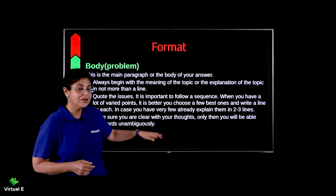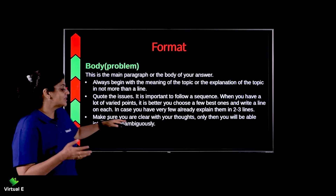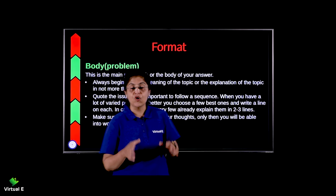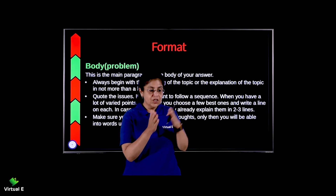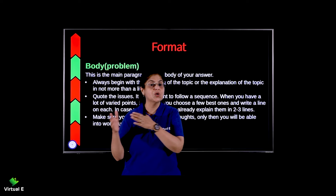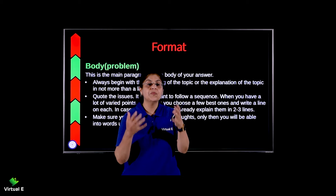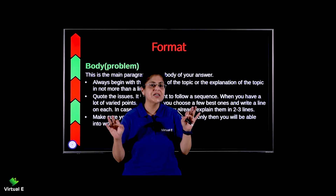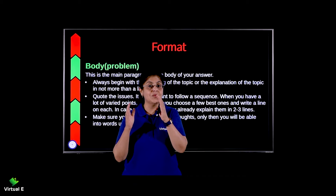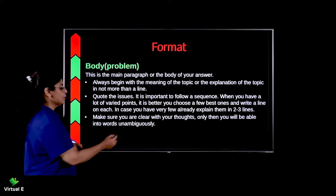Make sure you are clear with your thoughts — only then will you be able to put them into words unambiguously. First and foremost, make sure there is clarity in your mind. Decide whether you are speaking for the motion or going against it. Once you have done that, as per the information you will put down the words, absolutely clear — crystal clear, zero percent doubt. That clarity will come only when there is clarity in your thoughts.